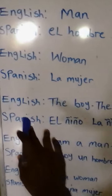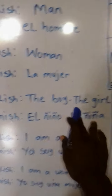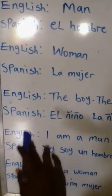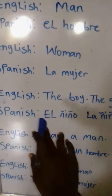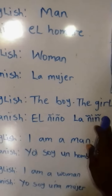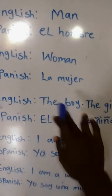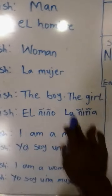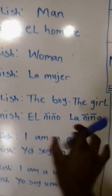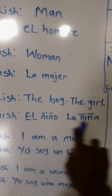In English, we say the boy, the girl. In Spanish, if you want to say that, we say el niño, la niña. El niño means the boy, la niña means the girl. So we join together: el niño, la niña.